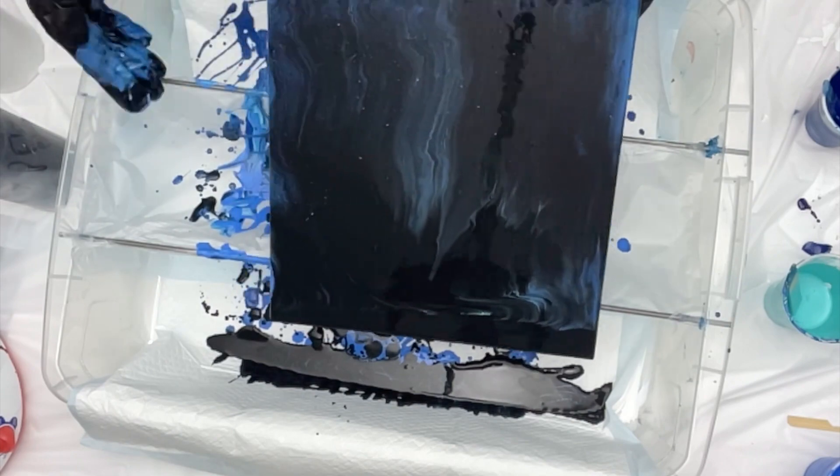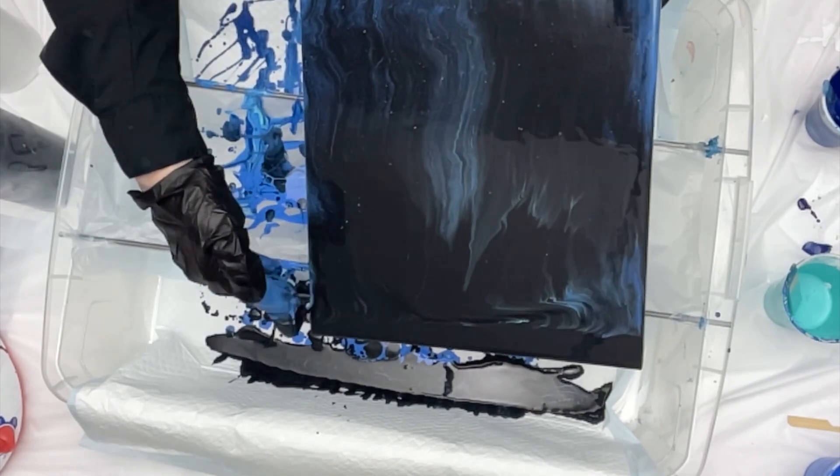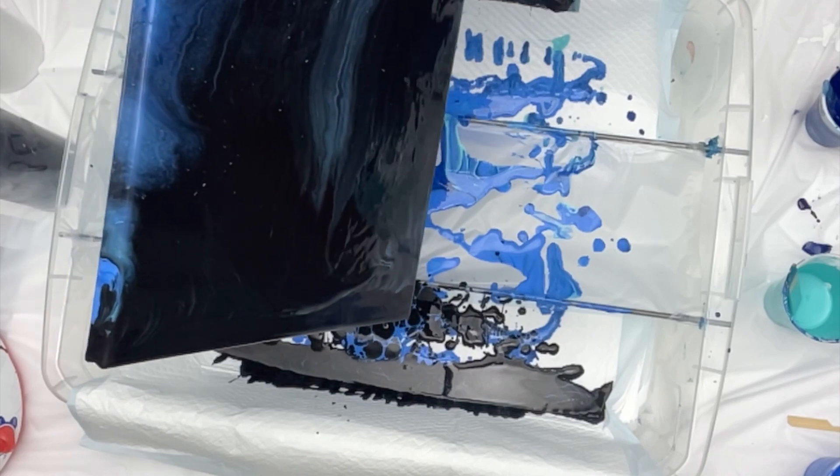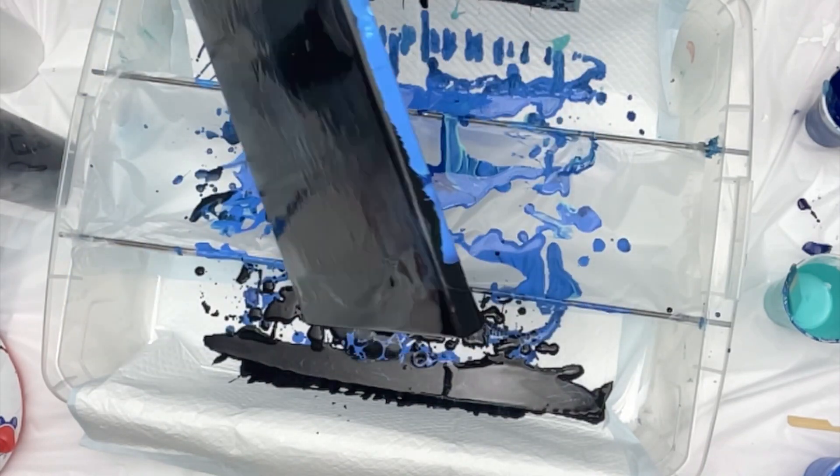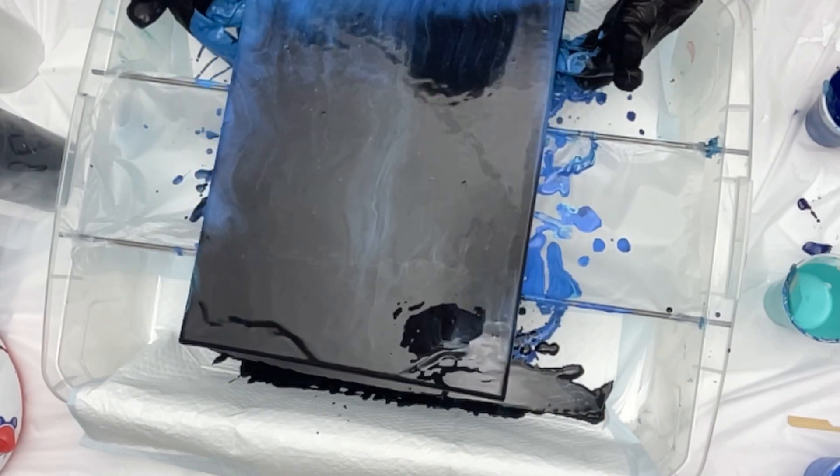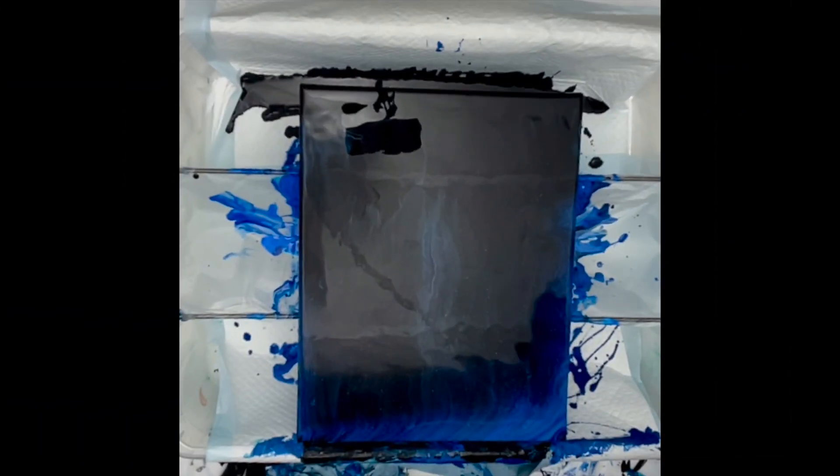And then I added it to the teal paint, so this is kind of a halfway bloom using one bloom mix paint and then the cell activator as my swipe. Wait till you see the end result, something really cool happened when I use this.